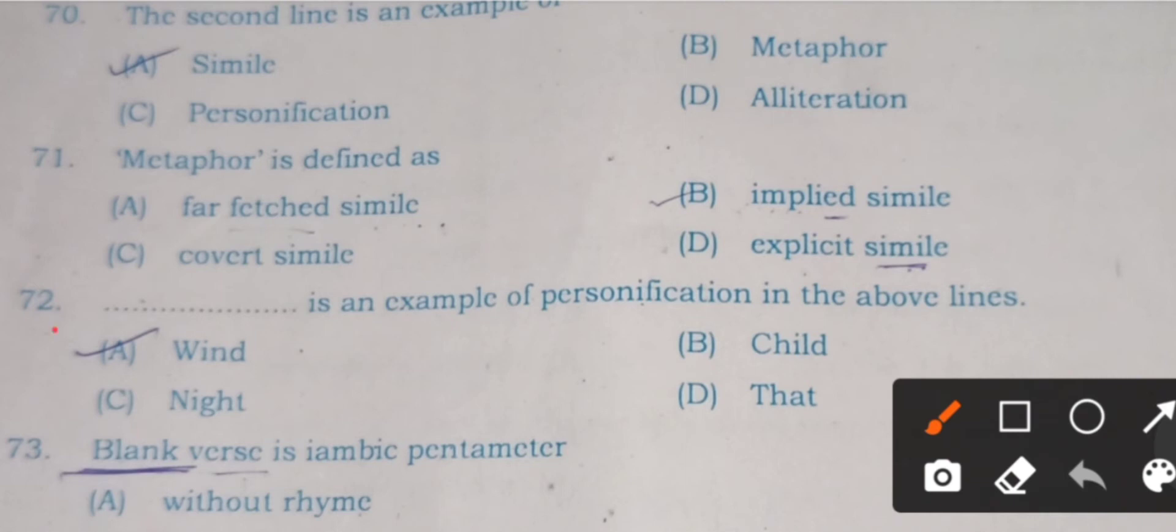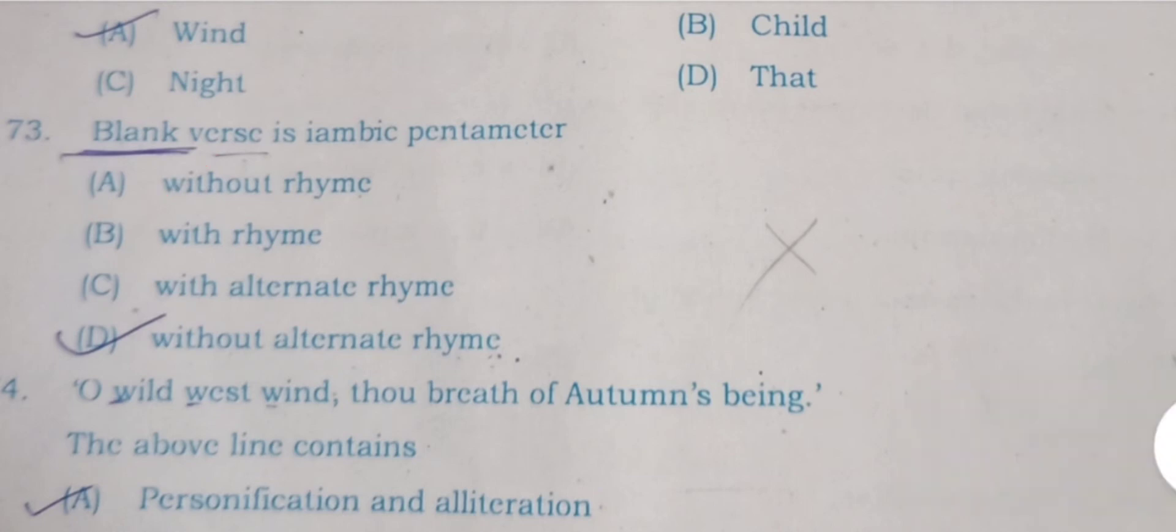Question 72: What is an example of personification in the above line? Wind is an example of personification in the above line. A is the right answer. Question 73: Blank verse is iambic pentameter. Four options are given: without rhyme, with rhyme, with alternate rhyme, and without alternate rhyme. Here 'without rhyme' - A will be the right answer. Blank verses are five-stress iambic pentameter lines which don't rhyme together.